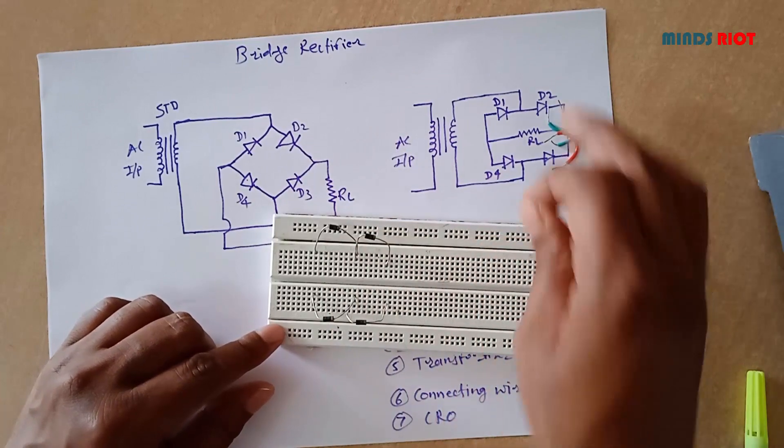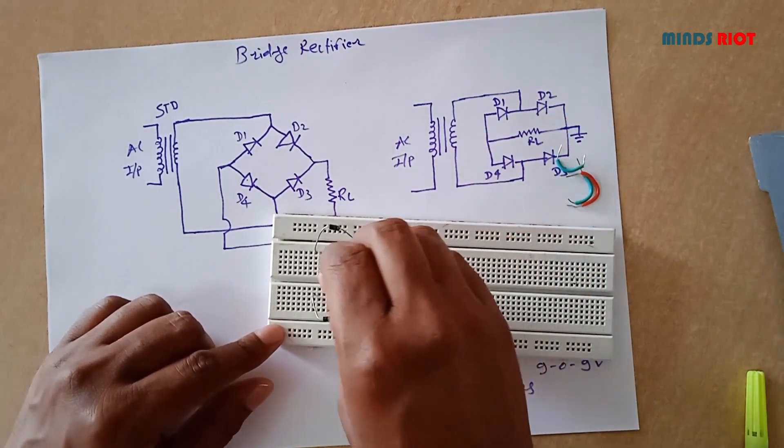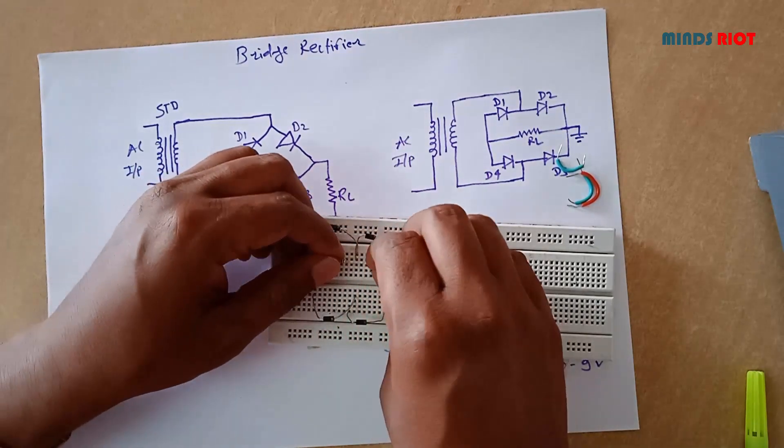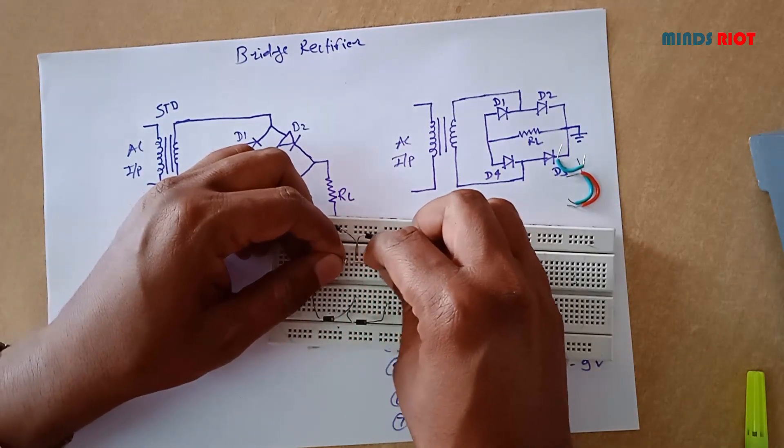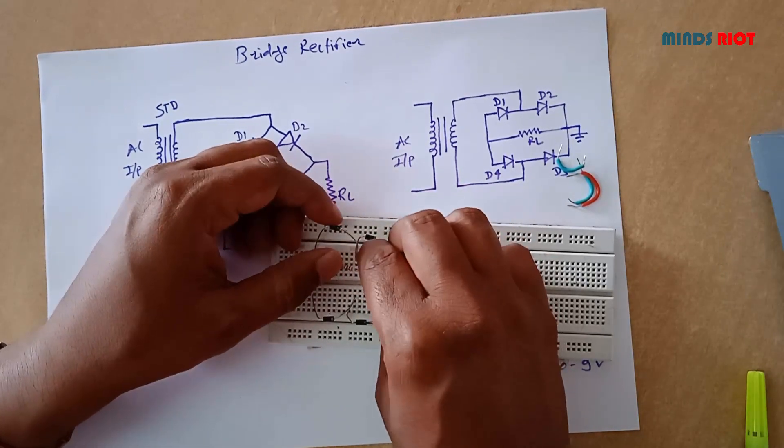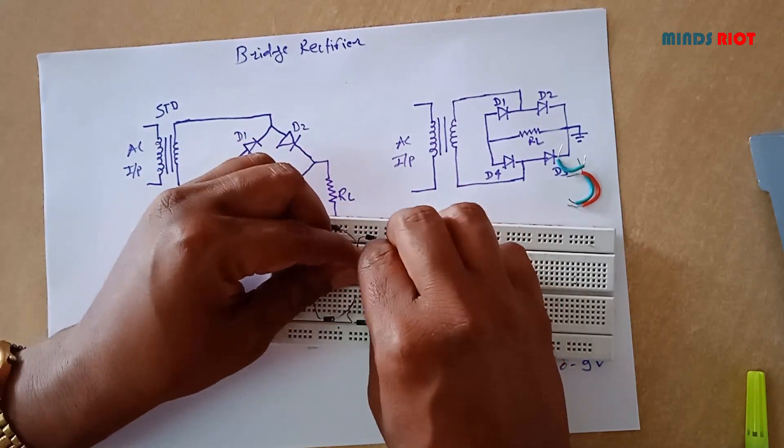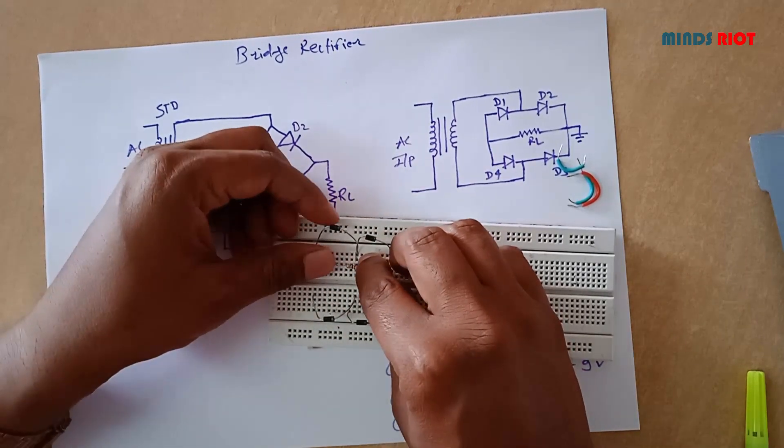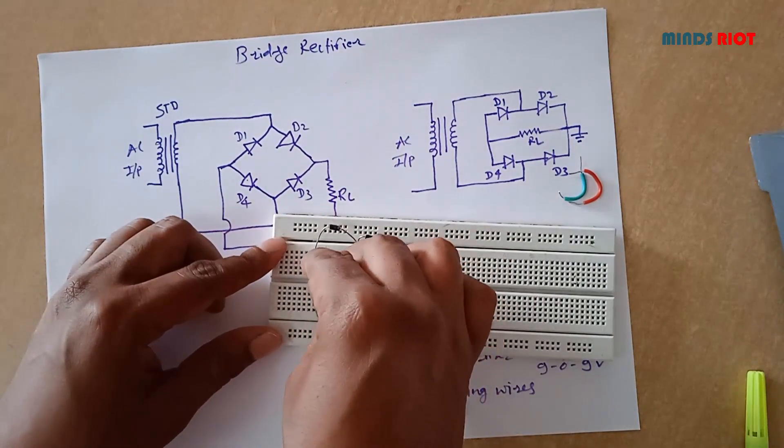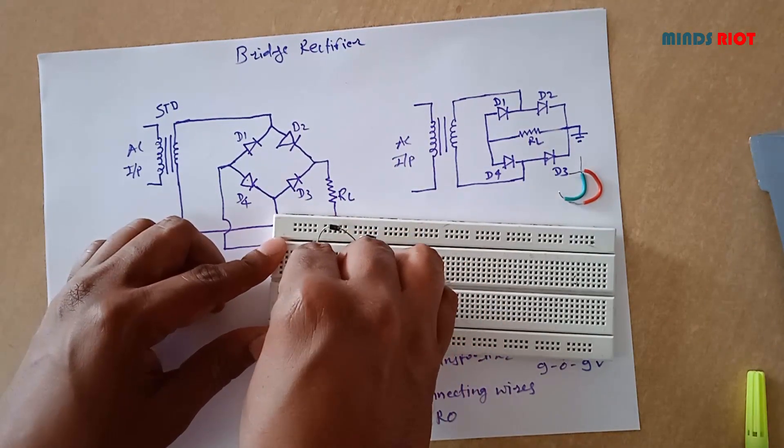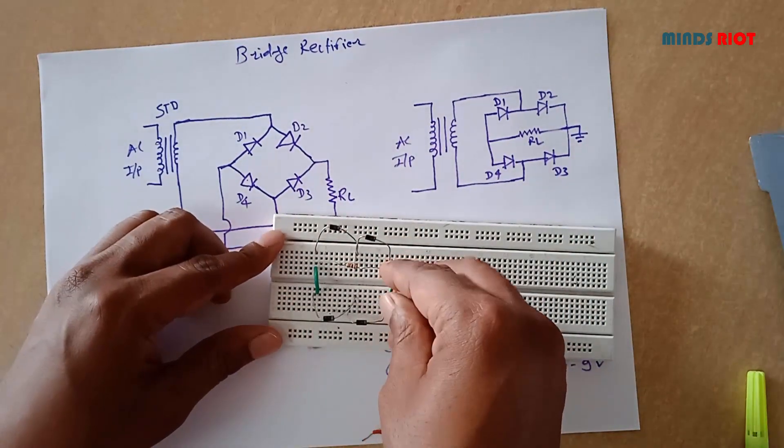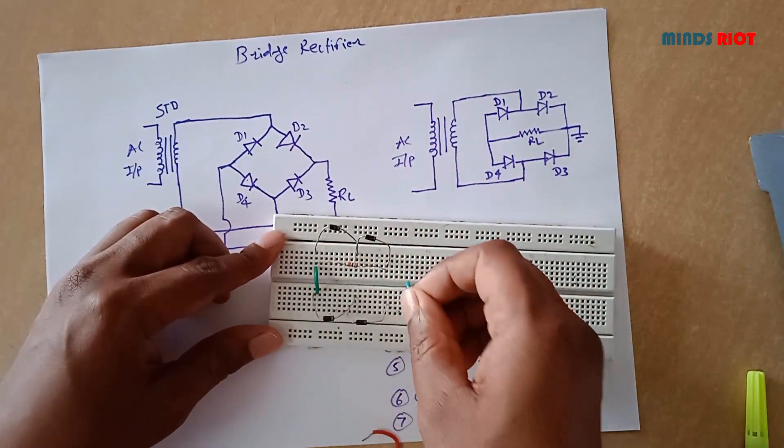Now placing load resistor. Connecting wires to short anode and cathode to cathode of diodes.